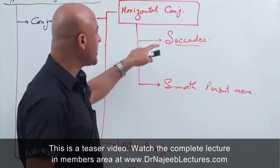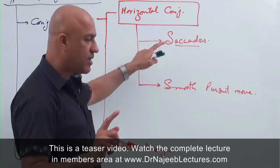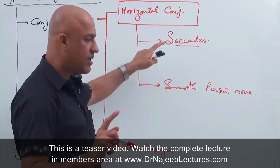The reason I distinguish between saccadic movements and smooth pursuit movements is important: the neural pathways which control saccadic movements and the neural pathways which control smooth pursuit movements are different.